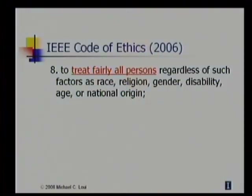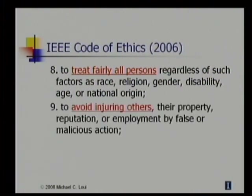Eighth, to treat fairly all persons regardless of such factors as race, religion, gender, disability, age, or national origin. Fairness here might include access to services, which is a provision in some other professions' codes of ethics. Ninth, to avoid injuring others, their property, reputation, or employment by false or malicious action. Avoiding injury to others would also include avoiding divulging confidential information such as trade secrets or other intellectual property. The code does not have an explicit statement about intellectual property, unlike some other codes, but one could interpret the ninth provision as including an obligation to ensure the confidentiality of trade secrets.